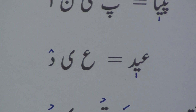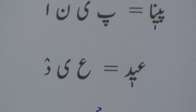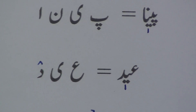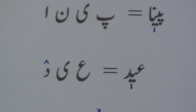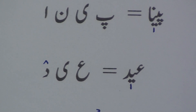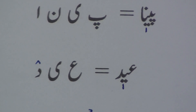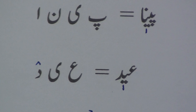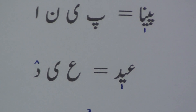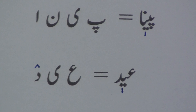Peen noon alif is 'ee,' and dal alif gives 'Eid.' We have put kharazir below the two dots, which means it is chhoti yee, and with dal it forms 'Eid.'